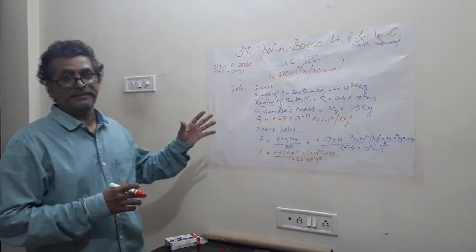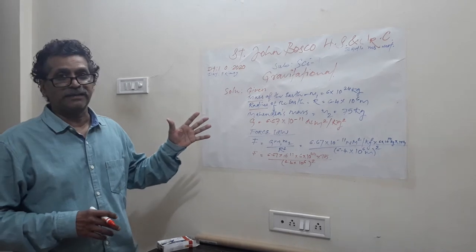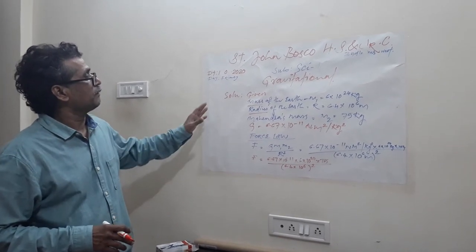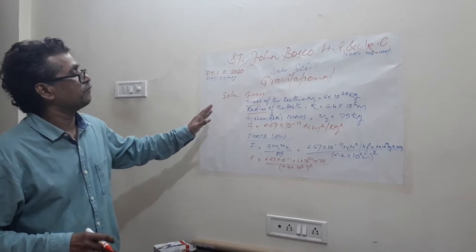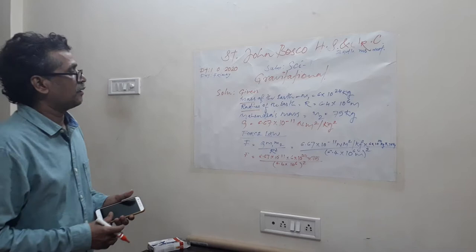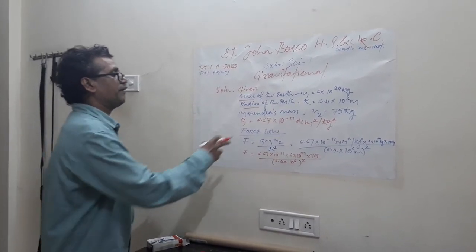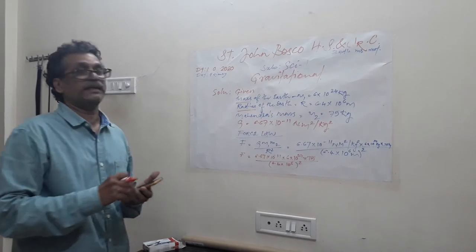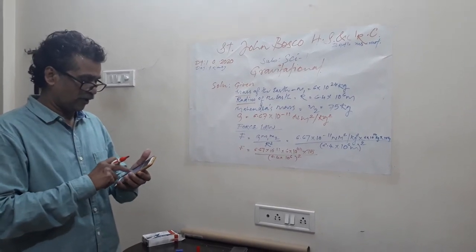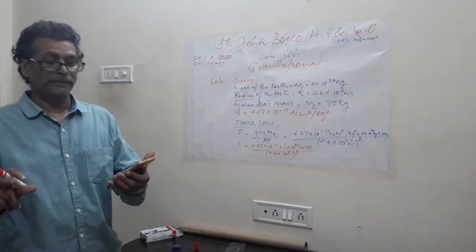Dear children, we have studied in the previous chapter about gravitation, and here we are going to do problem solving. You should know that the constant value of gravitational G is 6.67 into 10 raised to minus 11 Newton meter square per kg square. You have to know this very well, dear students.